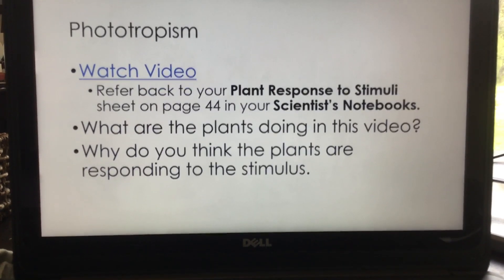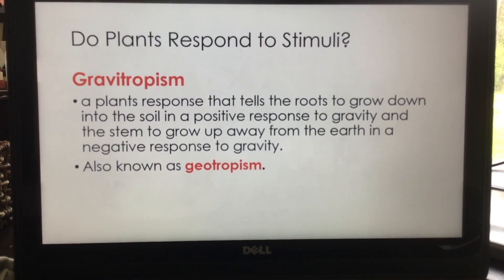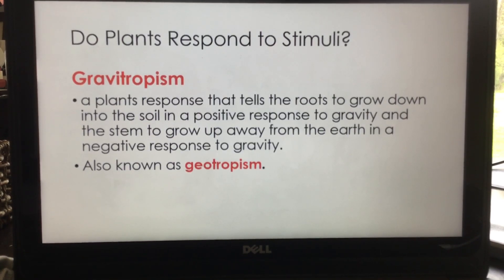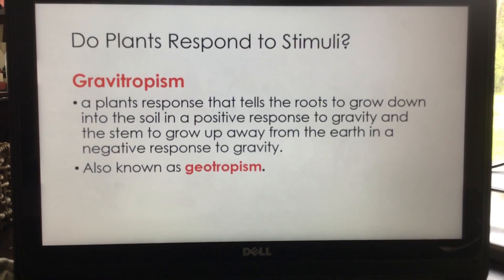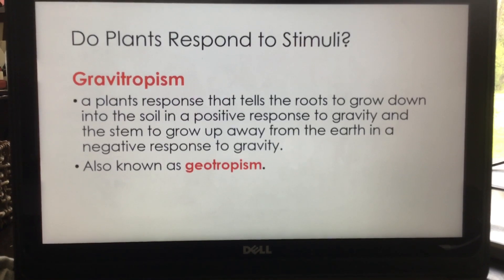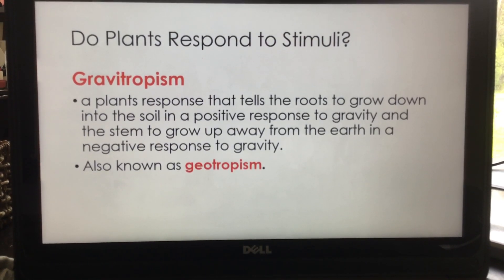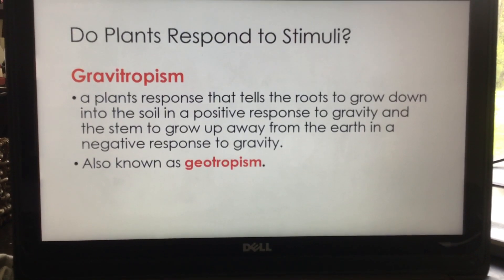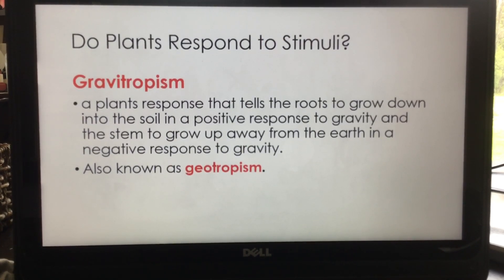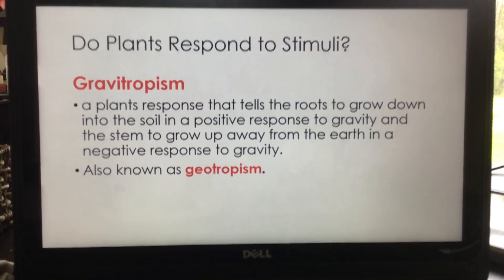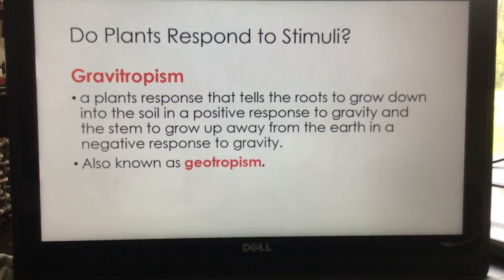Gravitropism is a plant's response that tells the roots to grow down into the soil — a positive response to gravity — and the stem to grow up away from the earth — a negative response to gravity. This is also called geotropism. If you put a bean seed in a plastic baggie with a paper towel, you'll see the root pop out and go down, and then the stem will pop up. The roots go down with the pull of gravity because water is down there, and the stem grows against gravity because the sun is up in the sky and the leaves need to reach it.